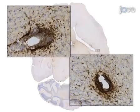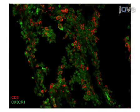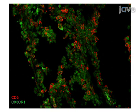Immune cells infiltrate the central nervous system during infection, trauma, autoimmunity, or neurodegeneration. While histochemical approaches can be used to determine the location of the infiltrating cells and to analyse the associated pathology, these techniques are limited by the number of antibodies that can be used simultaneously.